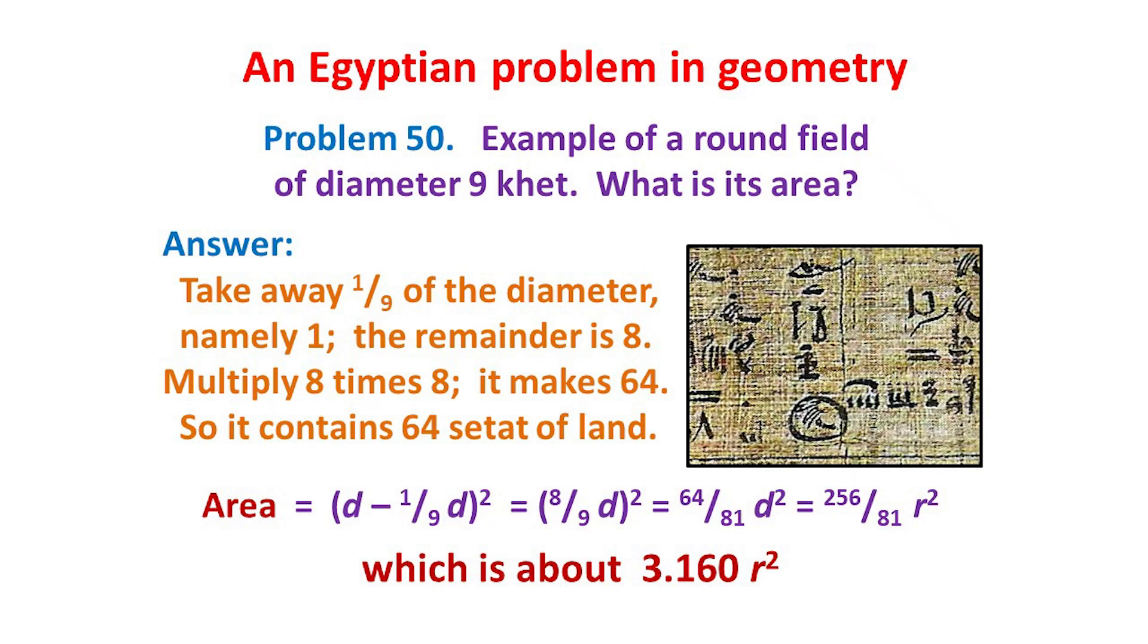Early civilizations needed to be able to measure circles and find their areas. Here's a problem from ancient Egypt, from around 1800 BC. It was written on a papyrus, which is now in the British Museum. Given a round field whose diameter is 9 units, what is its area? To answer such circle problems, their method was to take away 1/9 of the diameter, which here is 1, leaving 8.